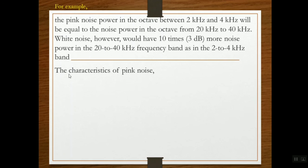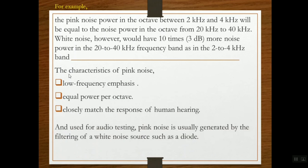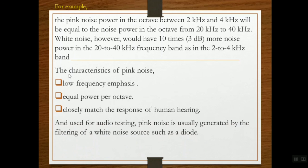The characteristics of pink noise are: low frequency emphasis, equal power per octave, and closely matches the response of human hearing. Used for audio testing, pink noise is usually generated by the filtering of a white noise source such as a diode.